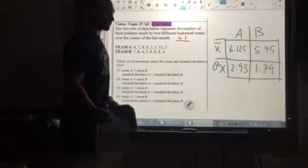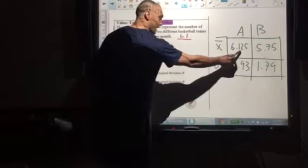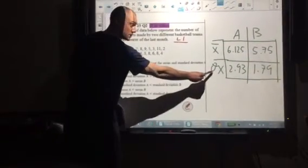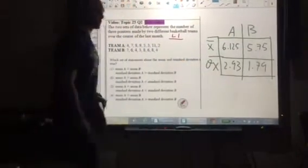So I check one variable statistics. The mean for Team A is 6.125, and the standard deviation, σx, for Team A is 2.93.